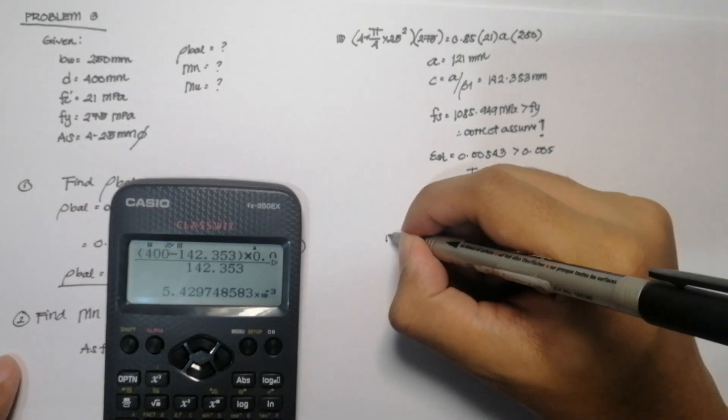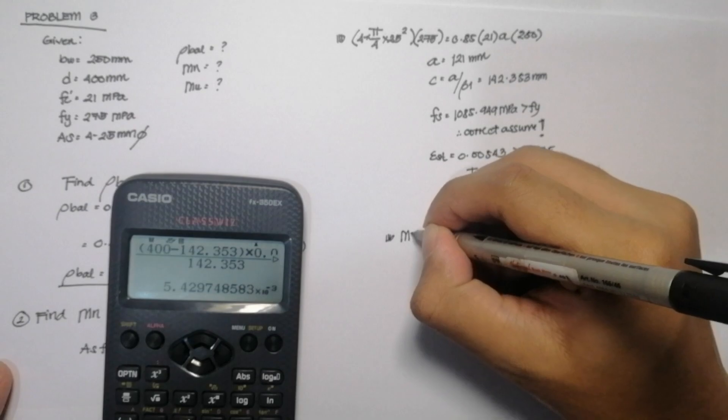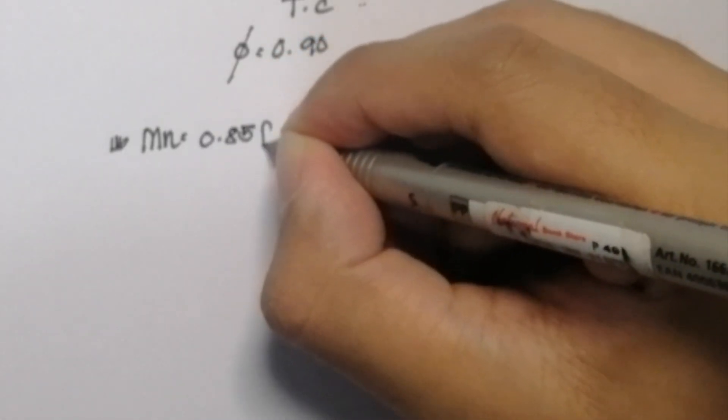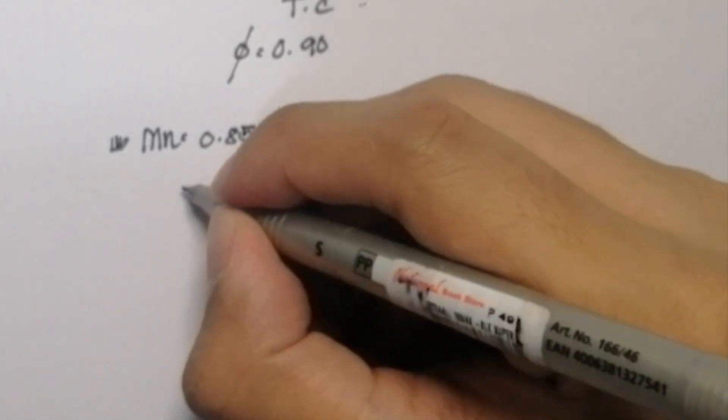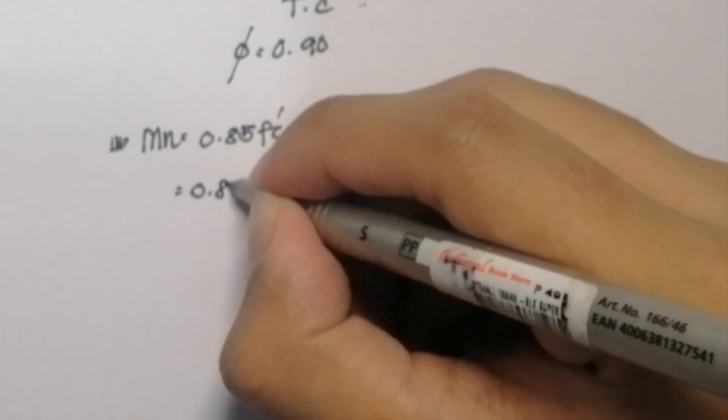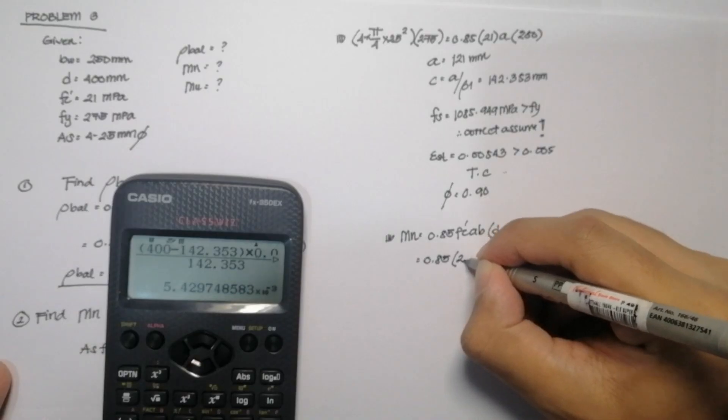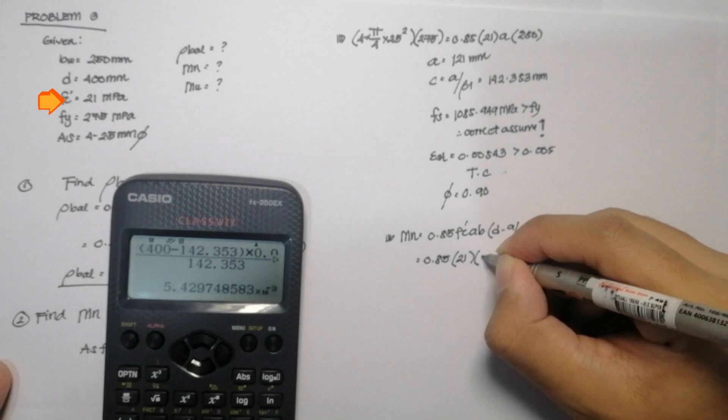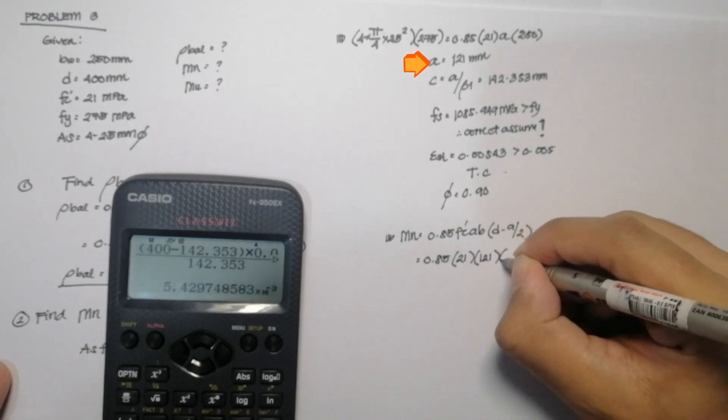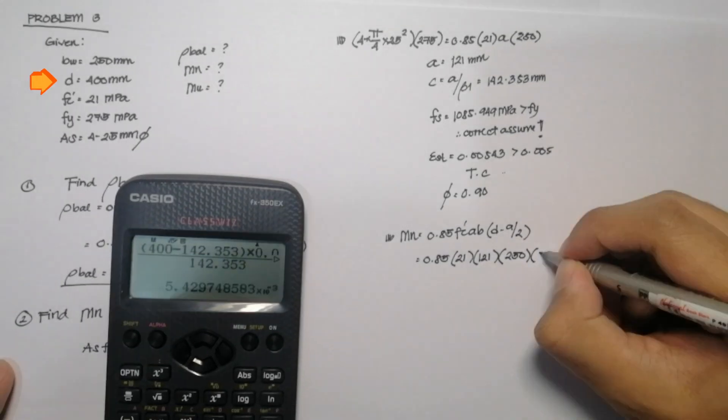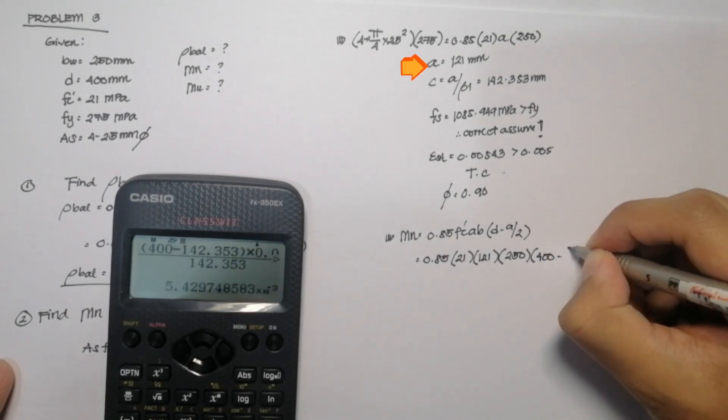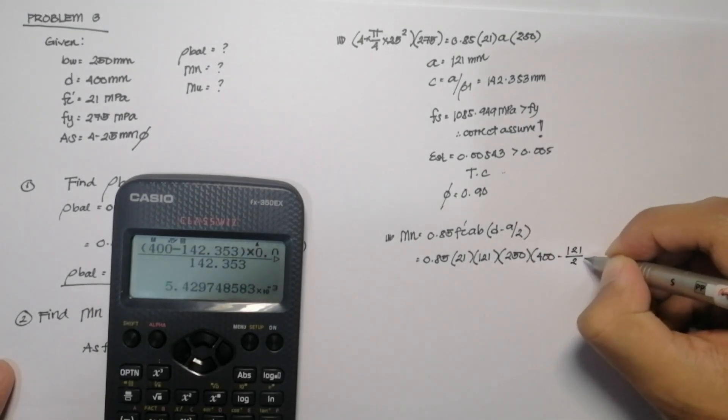So next, we need to solve for the nominal moment capacity of the beam. So in here, we are going to use the compressive force. So it will be 0.85 fc' multiplied by AB multiplied by the moment arm D minus A over 2. So let us input our values. It will be 0.85 multiplied by 21 multiplied by A, 121, B, 250, D, 400 minus A over 2, 121 divided by 2.